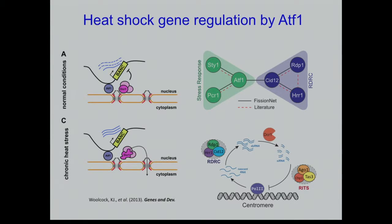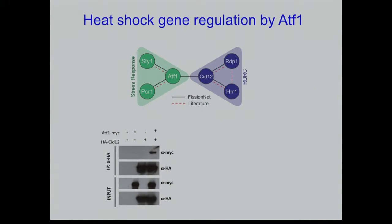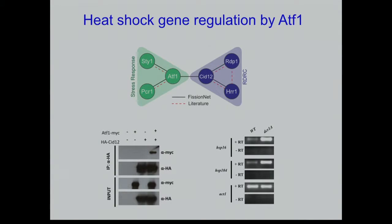Our hypothesis: since the prior paper found no physical link between DICER1 and the heat shock genes, and the RDRC complex turns nascent single-strand RNA into double-strand RNA — providing substrate for DICER1, which only works with double-strand RNA — maybe this is the physical link. ATF1 could recruit the RNAi machinery to heat shock gene target regions. We first confirmed the interaction happens in vivo by co-IP in fission yeast cells.